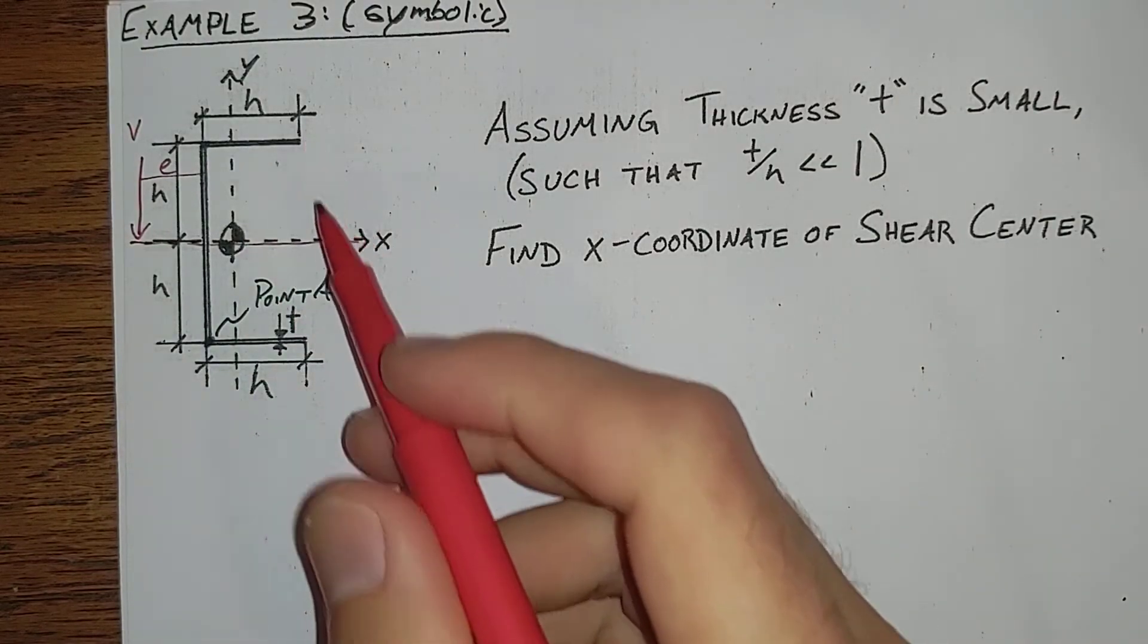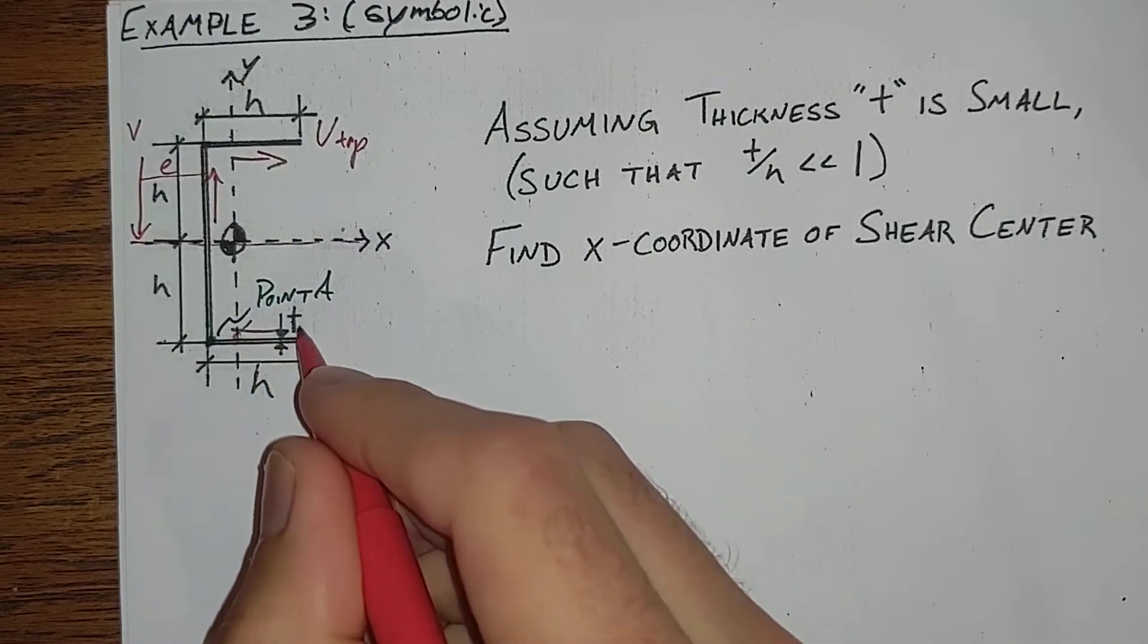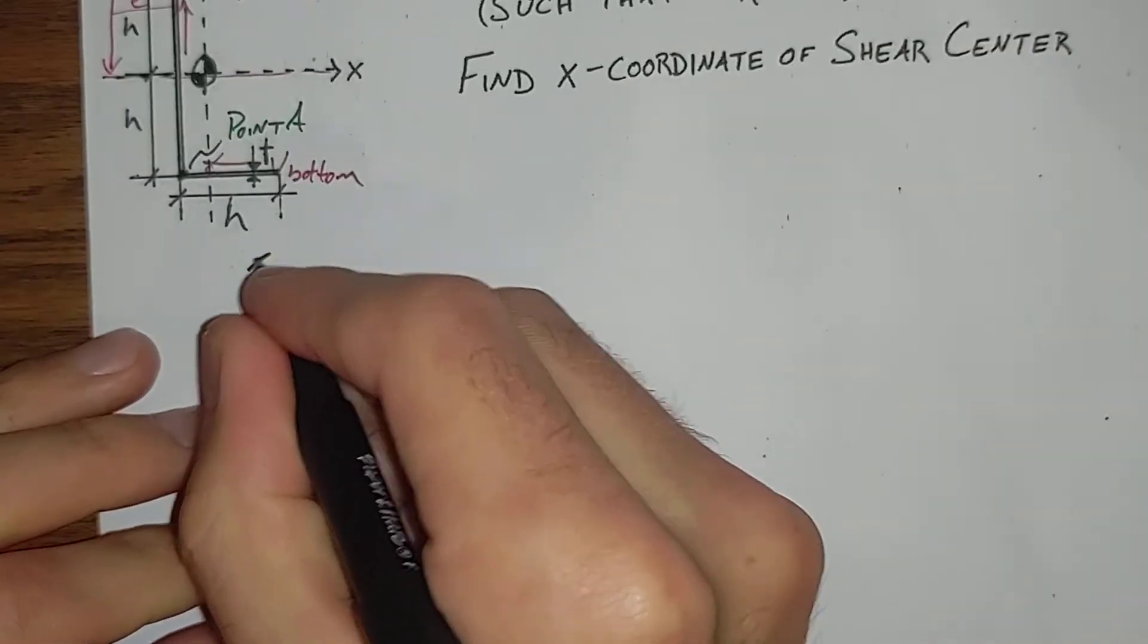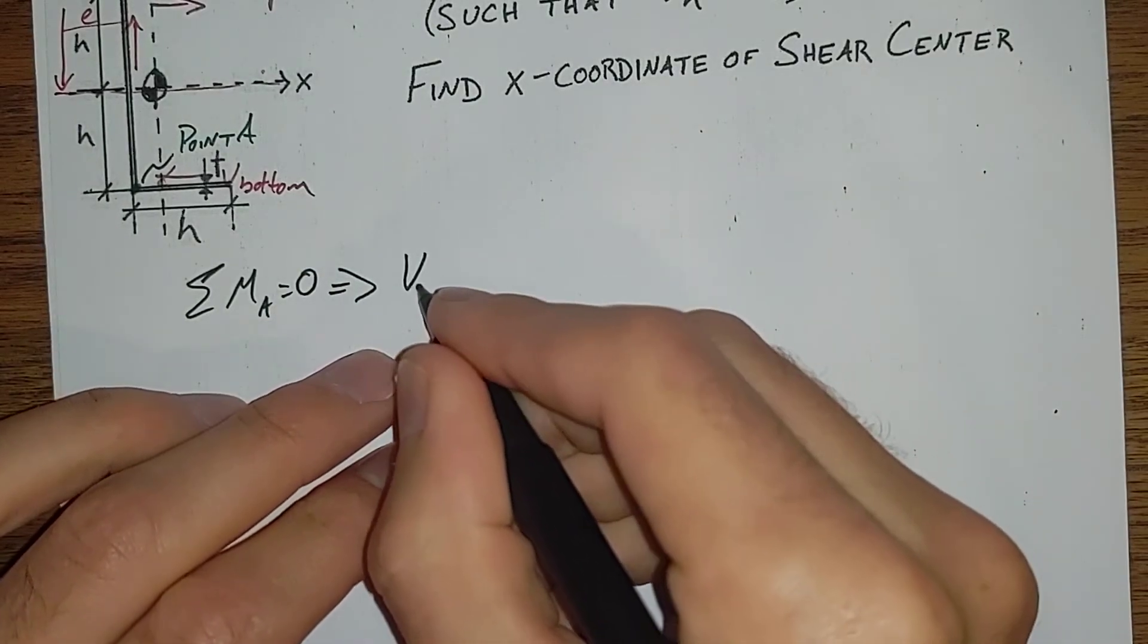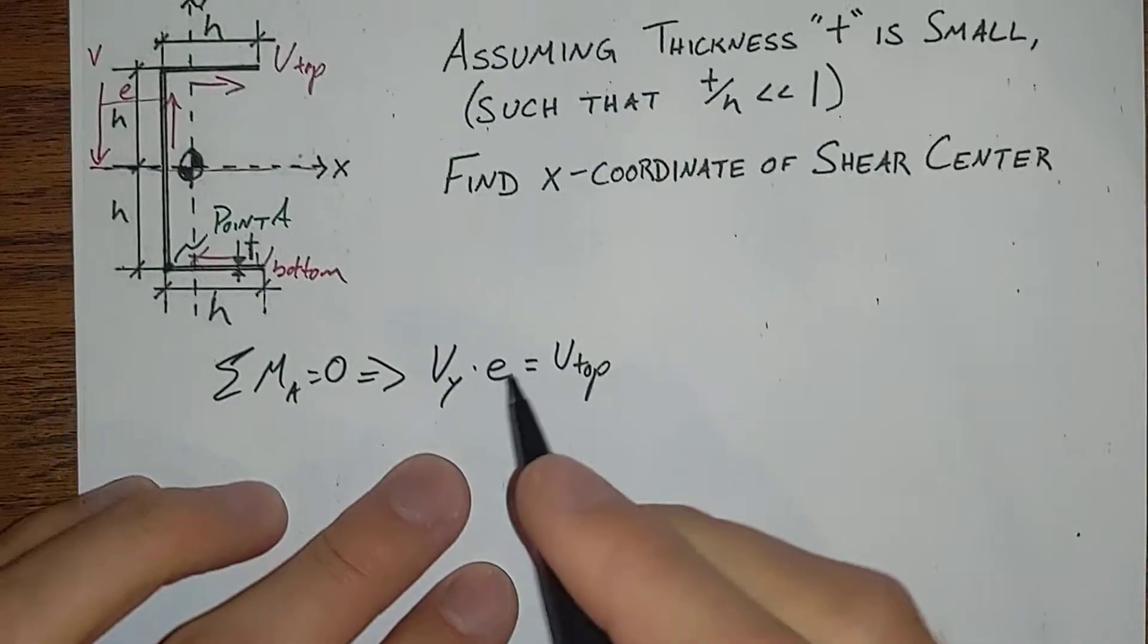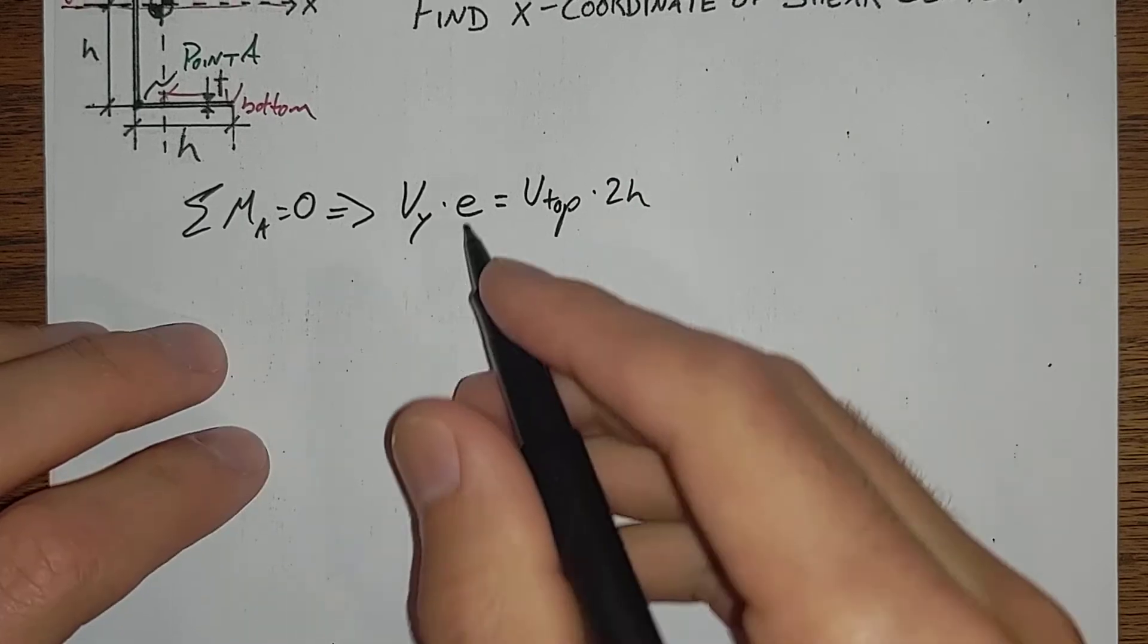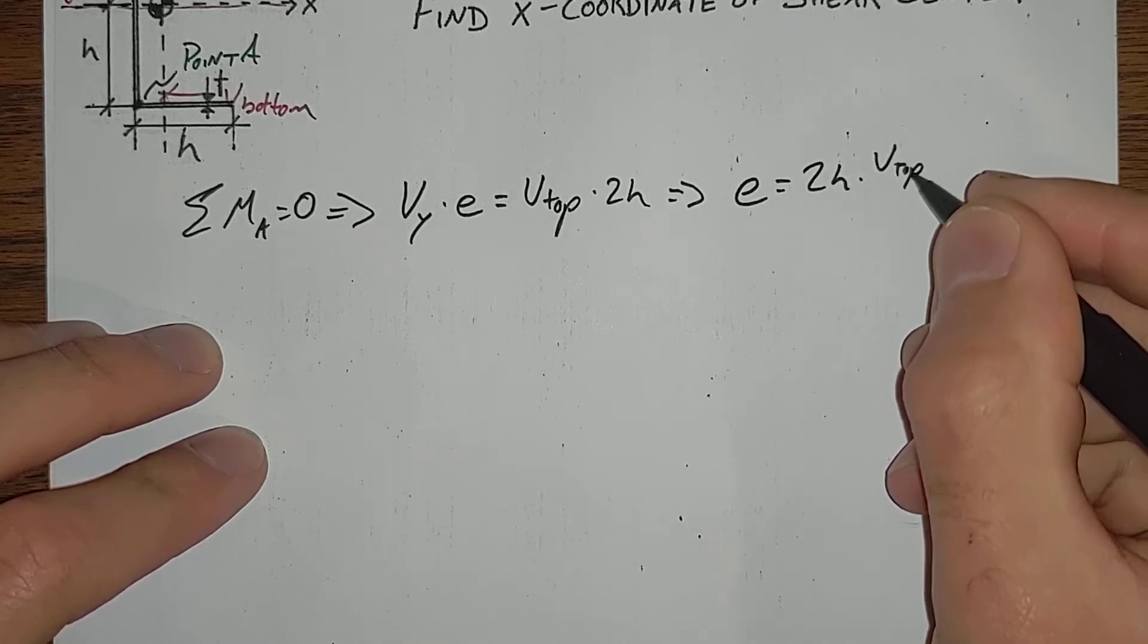We know the shear in the bottom has to equal the shear in the top. And we know that overall those have to go in those directions to counter each other out. So this gives us sum of our moments about point A equal to zero implies that V applied, V_y times e, is equal to the top times, we're looking at a shape that is 2h tall, h wide and a constant thickness t, so times 2h, giving us that e is equal to 2h, so V_top over V_applied.